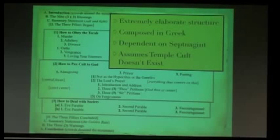And they came up with the exact same thing: how to obey the Torah, how to pay cult to God, how to deal with society. So that Jesus is giving the exact same speech in his version of this rabbinical response to the destruction of the temple, which implicitly assumes that you can't pay cult to God through the temple because it doesn't exist anymore, means that this was written after the destruction of the temple.